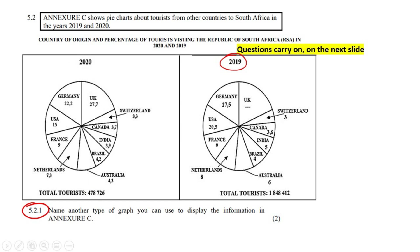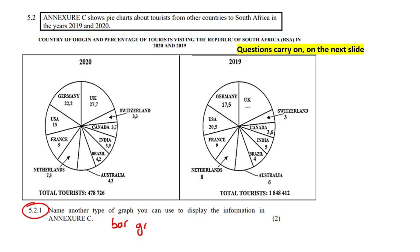We all know why — the year 2020. The first question asks: name another type of graph you could use to display this information. You could use a bar graph, for example.